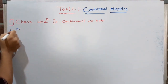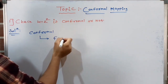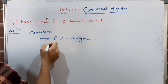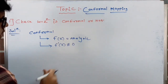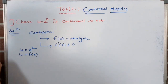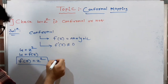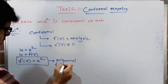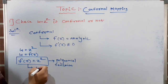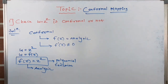For conformal mapping there are two conditions: first, f(z) should be analytic in the region R of the z-plane; second, f′(z) should not equal zero. Here w=z², so f(z)=z². This is a polynomial function, and every polynomial function is analytic, so f(z)=z² is analytic.